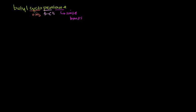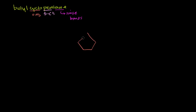We have a butyl group added to that five-carbon ring. How do you know which carbon to add it to? When you're dealing with a ring and you only have one group on the ring, it doesn't matter. Let's draw the cyclopentane — it'll just be a pentagon, five carbons connected in a ring. It doesn't matter where I draw the butyl group because it's all symmetric. It'll start to matter once we add more than one group.